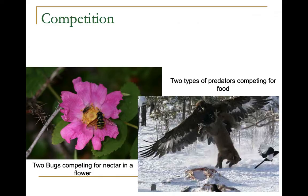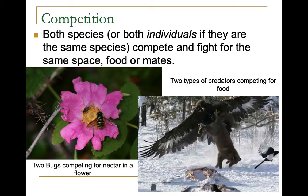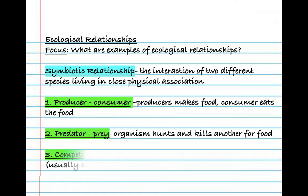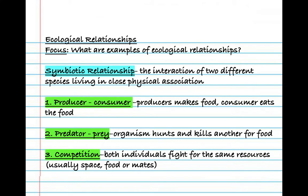Our third type of relationship is competition. We have competition between different species, and sometimes between individuals of the same species, particularly if they're fighting for mates or hunting grounds. Basically, two organisms are fighting for resources — typically space, food, or mates. In the first picture, we have two bugs competing for nectar; in the second, two scavengers competing for a carcass. Keep in mind, plants can also compete — for sunlight, water, and space.